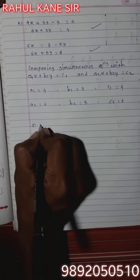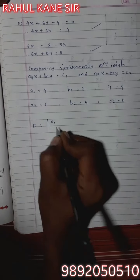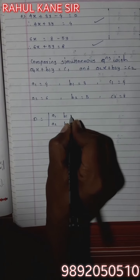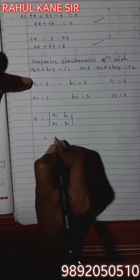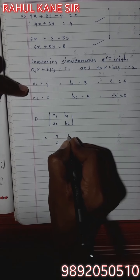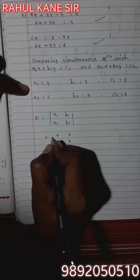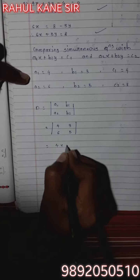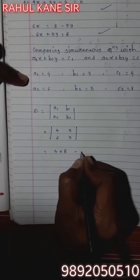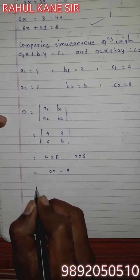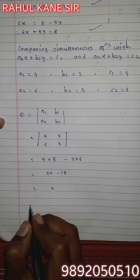First, D equals |a1, a2, b1, b2| equals |4, 6, 3, 5|. By cross multiplication: 4×5 minus 3×6. Fours fives are 20, threes sixes are 18. 20 minus 18 equals 2.